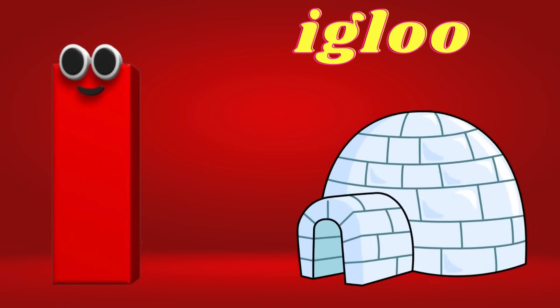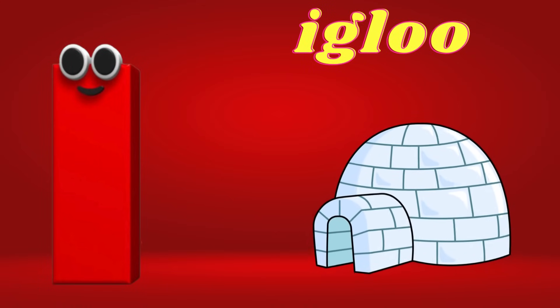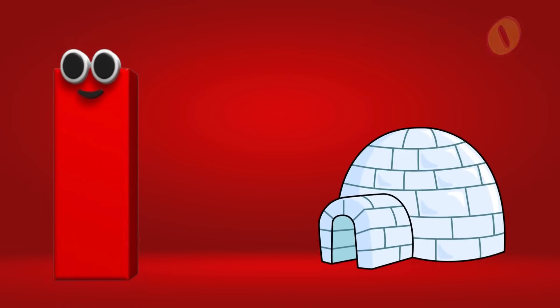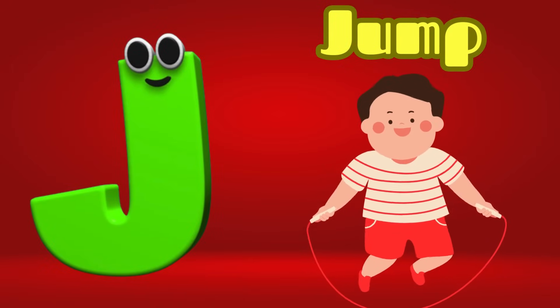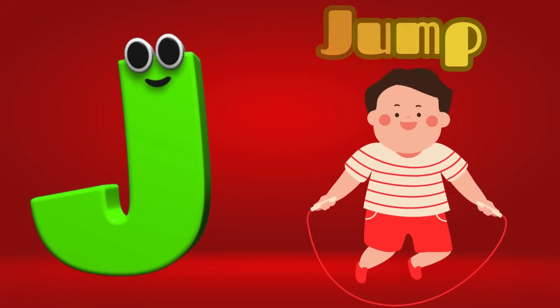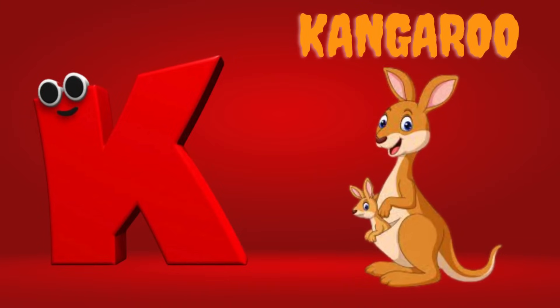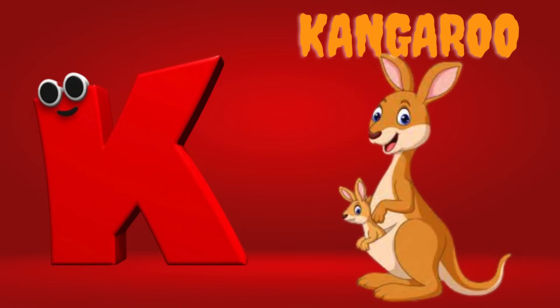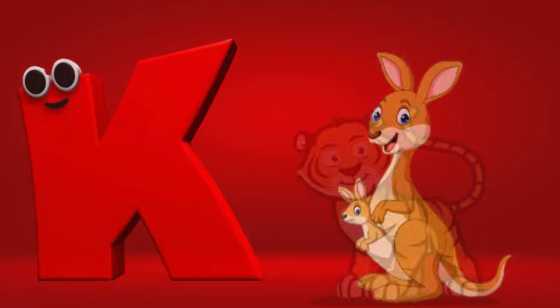I is for Igloo, I-I-Igloo. J is for Jump, J-J-Jump. K is for Kangaroo, K-K-Kangaroo.